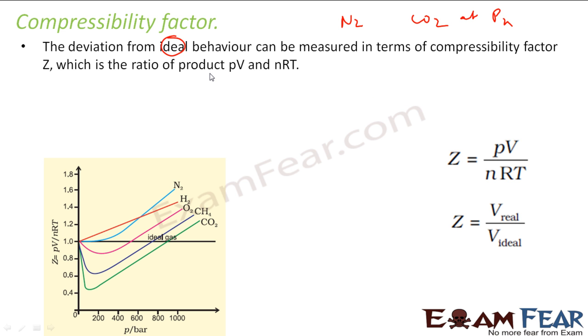So how to measure the deviation? Because some real gas may deviate more, some real gas may deviate less if you compare from the base ideal gas. So we have a term called compressibility factor to measure the deviation of a real gas from the ideal behavior.